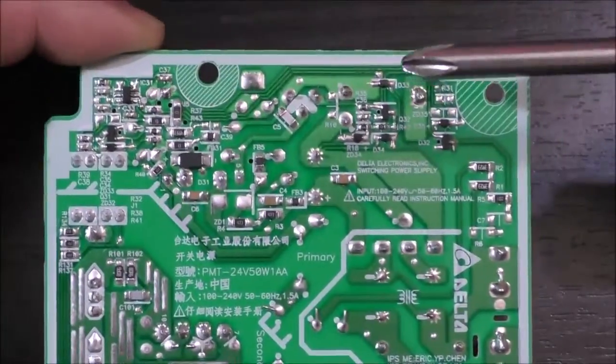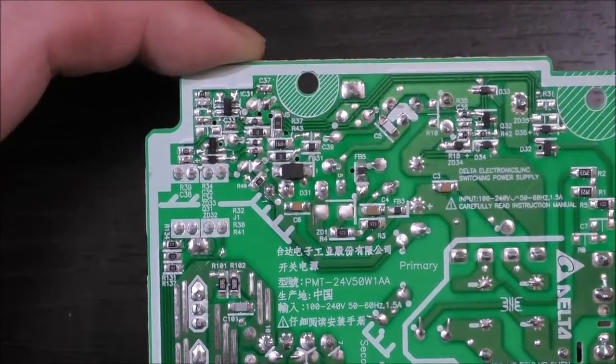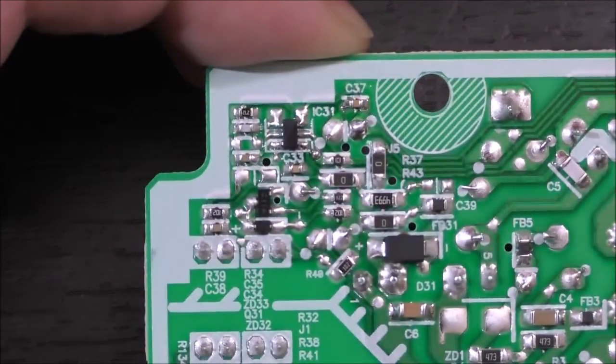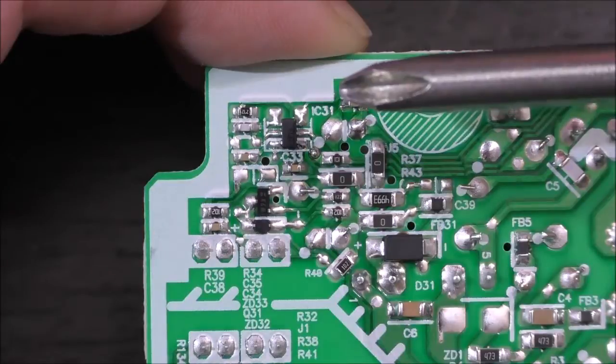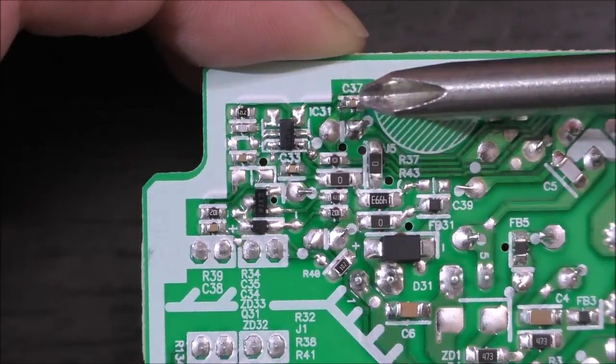And if we look closer, we can see a few small ICs over here. And this is what I suspect is the main controller, the main forward converter controller. And it's actually a very small IC, IC 31 over here.